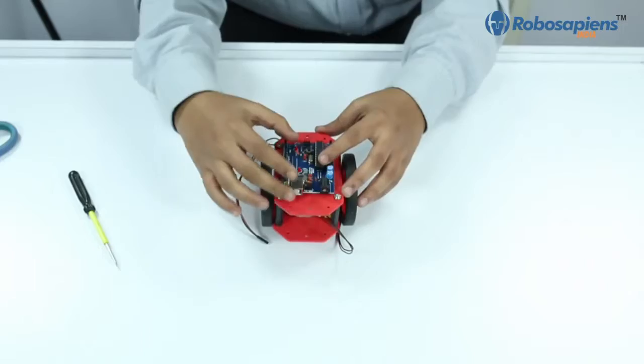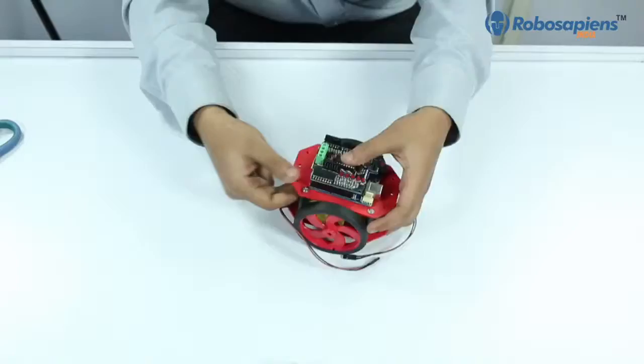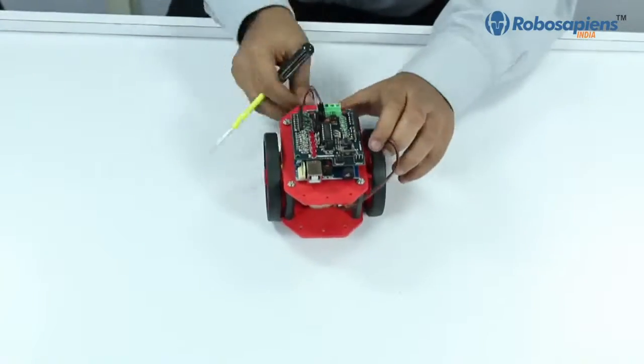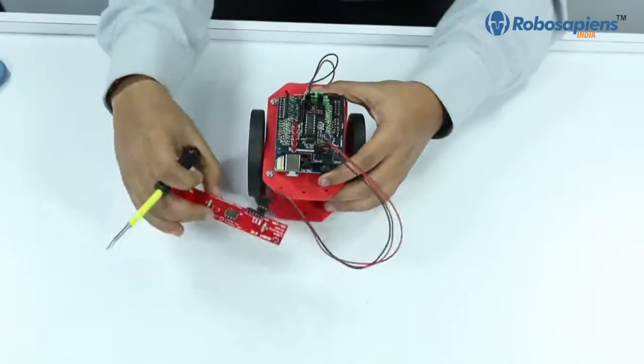Our next step is to fix the Arduino board on the upper chassis and place the motor driver shield on our Arduino board. Then make the connections between motor driver shield and motors. Now we are going to connect the light searching sensor on the motor driver shield.